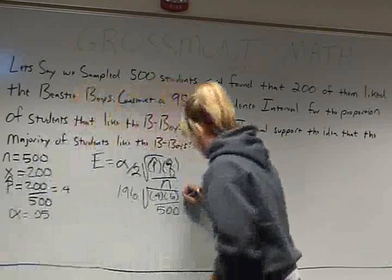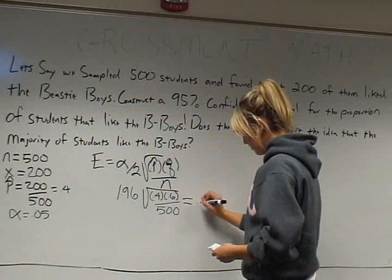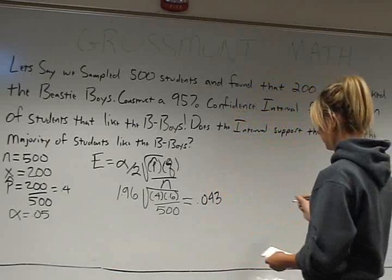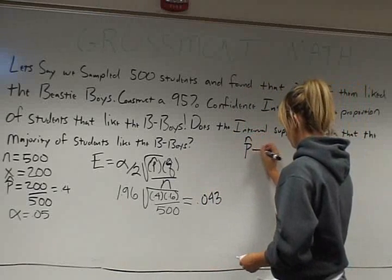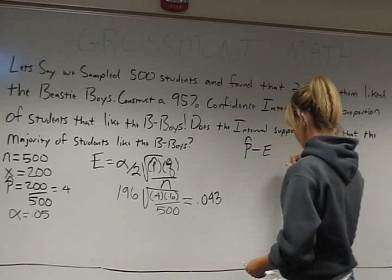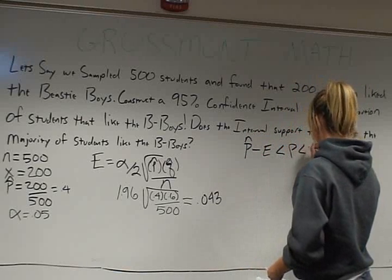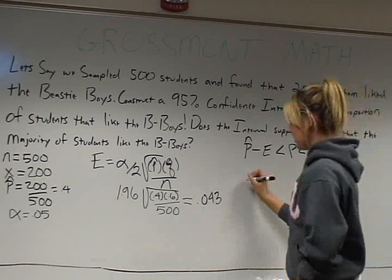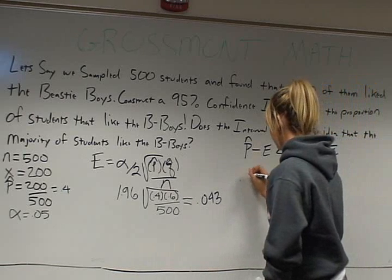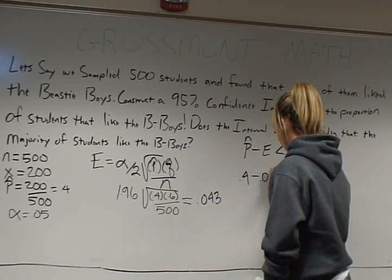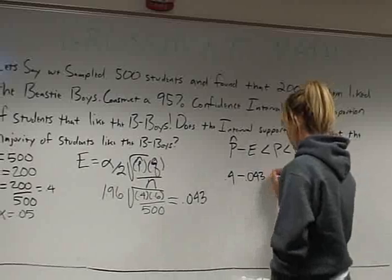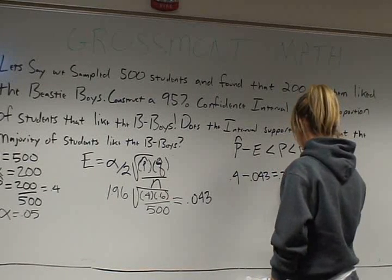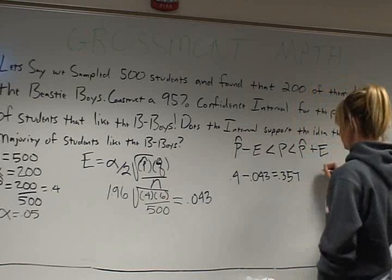This comes out to be the margin of error E. To find the confidence interval you do p-hat minus E and p-hat plus E, plugging in your p-hat value on both sides.